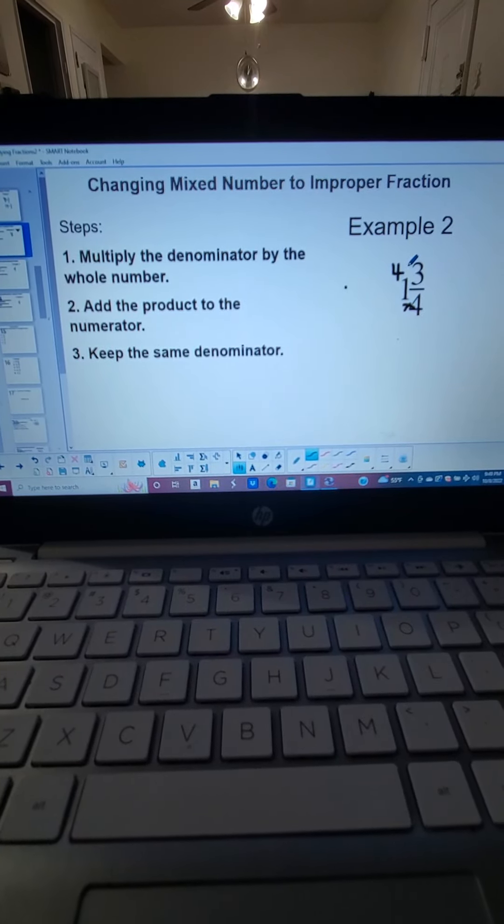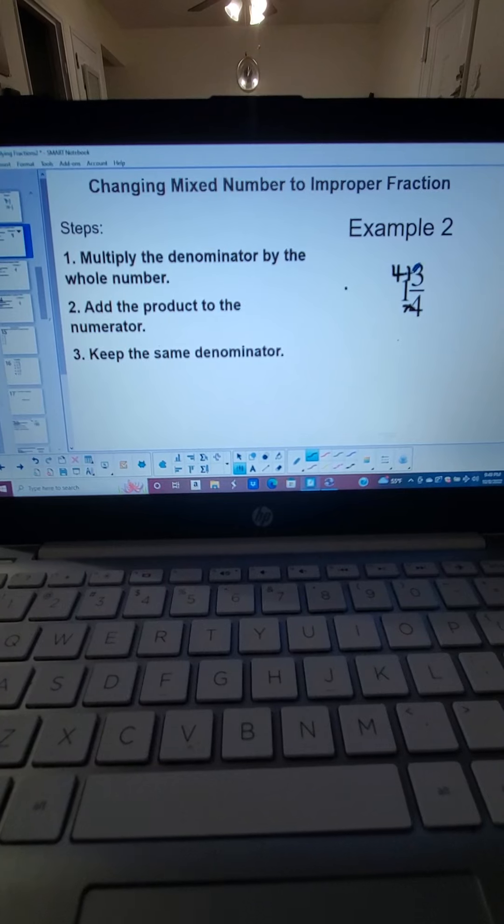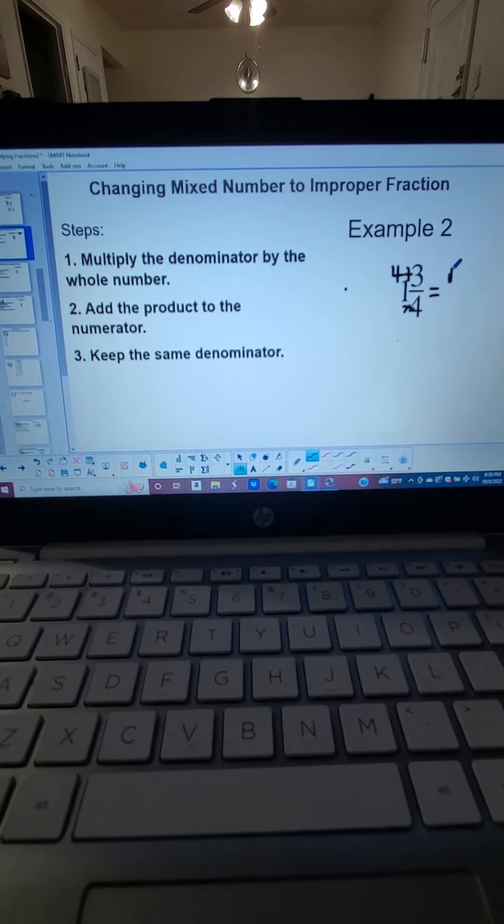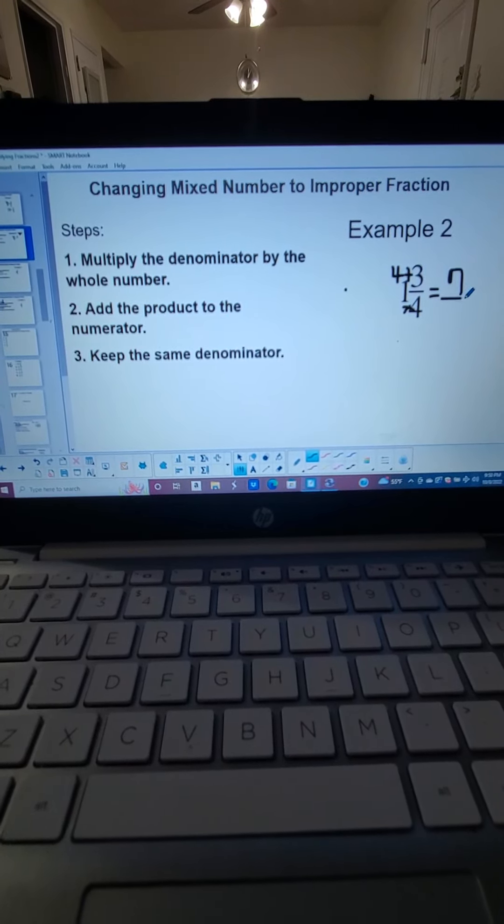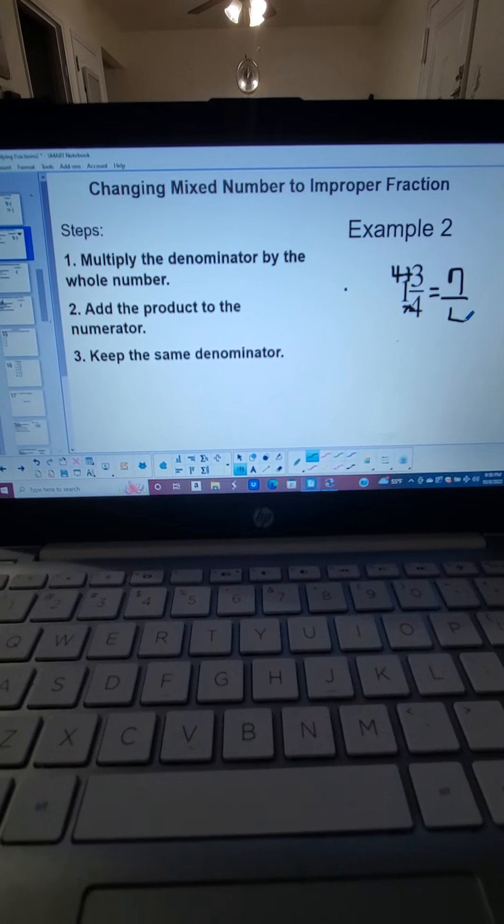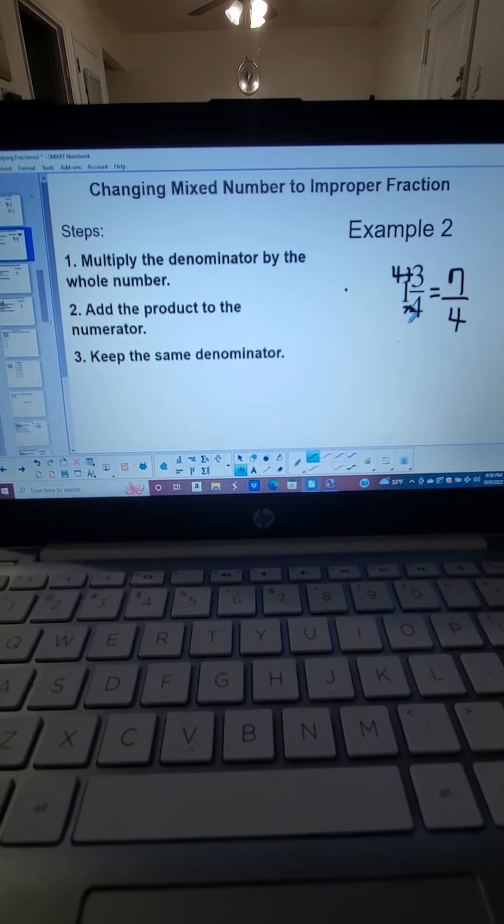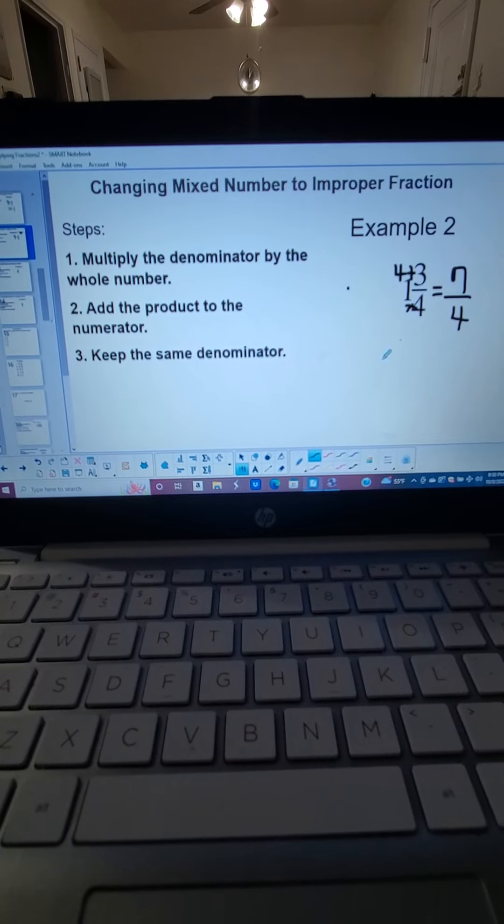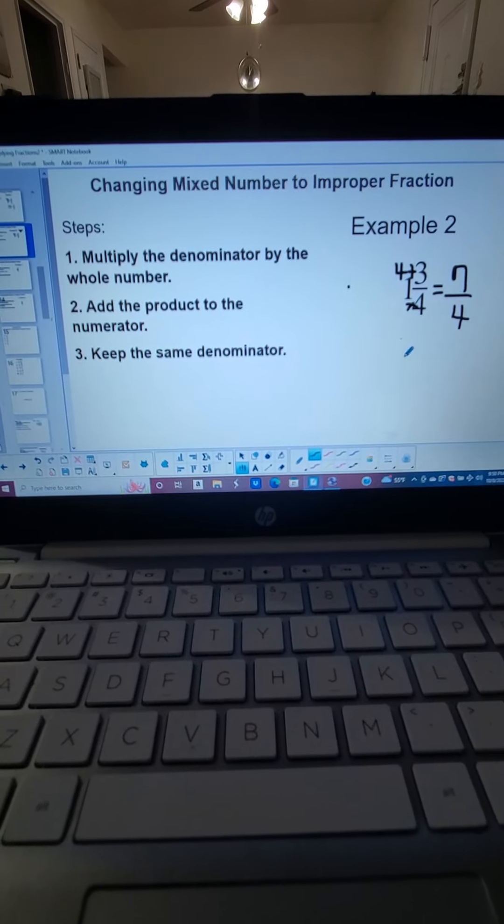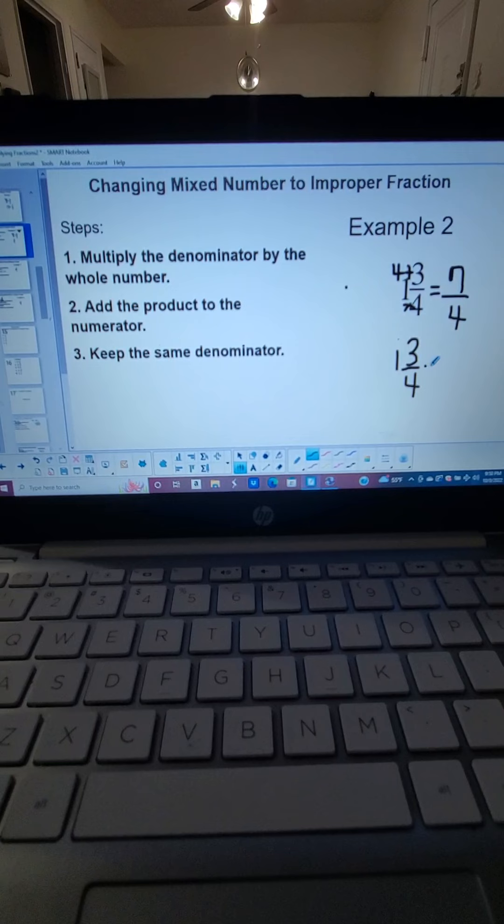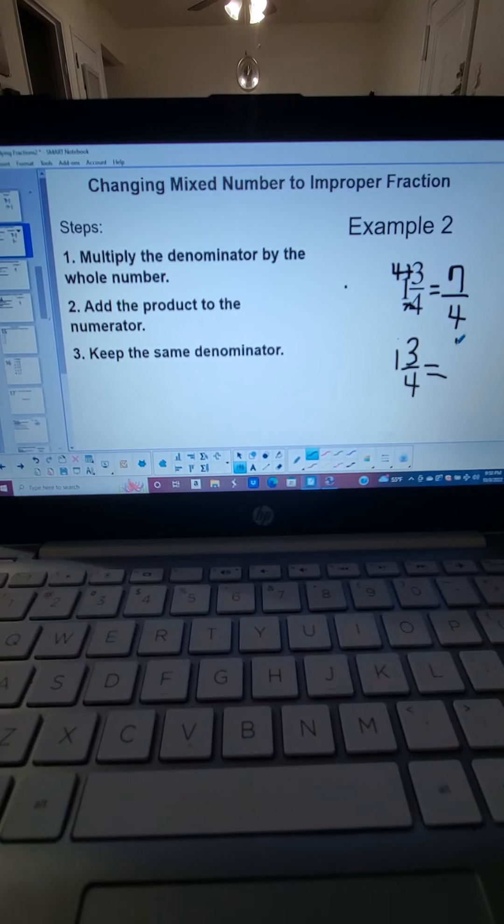And we add that product to the numerator, which is 3. So 4 plus 3 is 7, 7 fourths, because 4 is the denominator of the fraction. We are going to keep the same denominator. So 1 and 3 fourths is equal to 7 fourths.